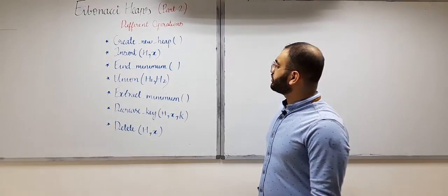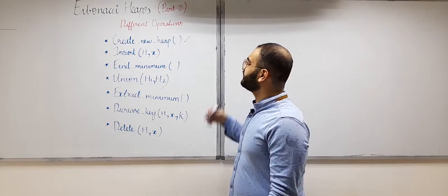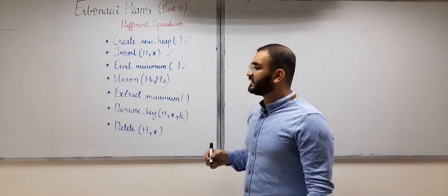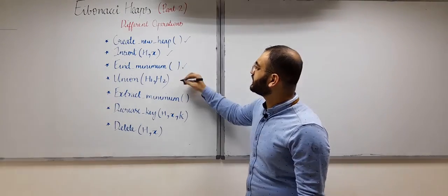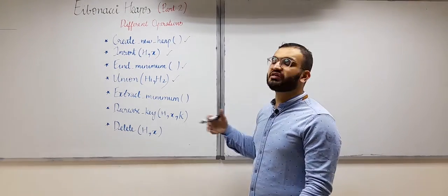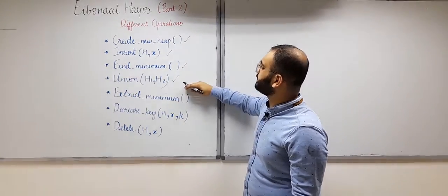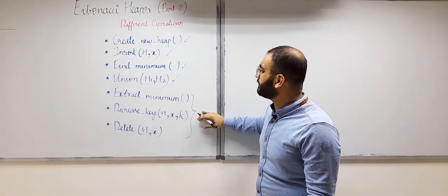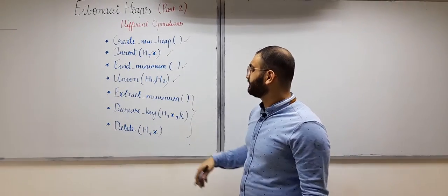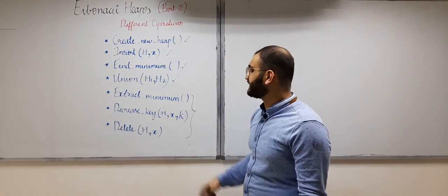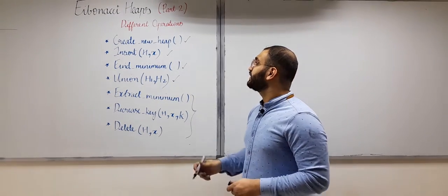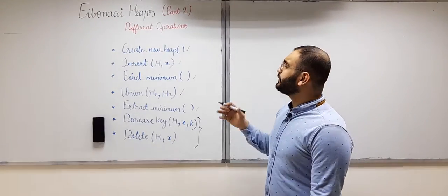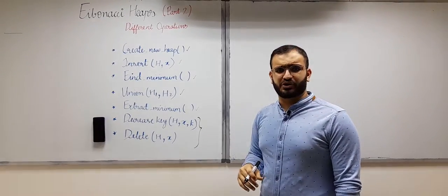So let us look at the operations. First, we will learn how to create a new heap and its time complexity. Then how to insert an element in a Fibonacci heap. Then how to find the minimum element. Then we will learn the union or merge operation between two Fibonacci heaps H1 and H2. We will cover these four simpler operations in this video. In the next videos we will cover the three more complex operations: deleting the minimum element, decreasing a node's value, and deleting any element. I'll calculate step by step the time complexity for each operation.